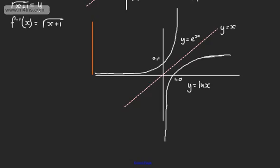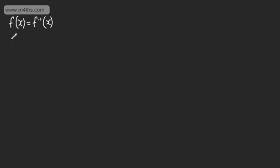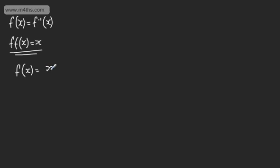Let's look at one last thing. There are some functions which we say are self-inverting, such that f(x) is equal to its inverse and vice versa. Let's take f(x) equals x over (x minus 1) and show that this is a self-inverting function.